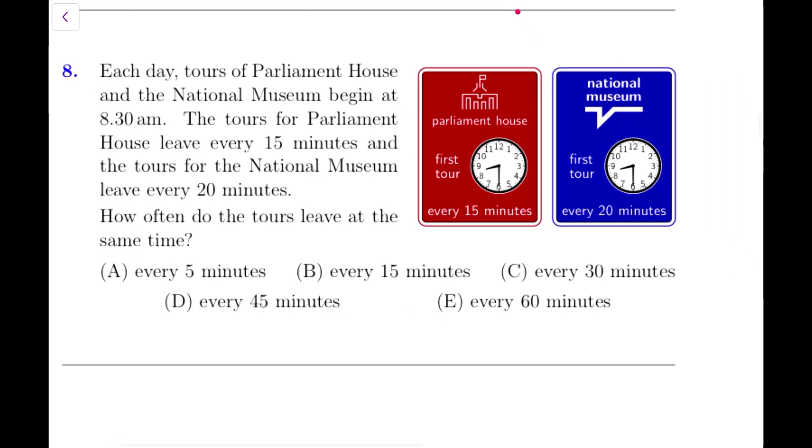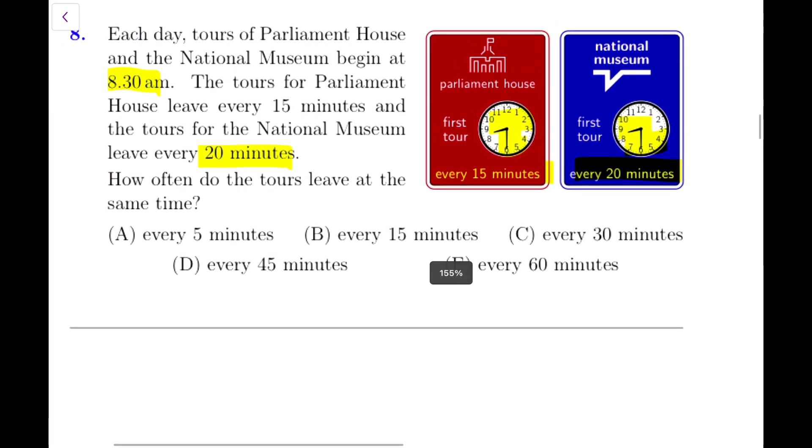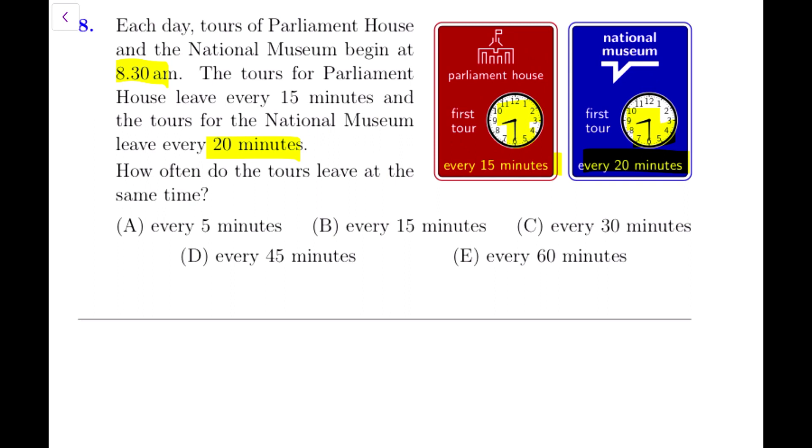Alright, this is a good one. Each day, tours of Parliament House and the National Museum begin at 8:30 a.m. We can see they both start at 8:30. The tours for Parliament House leave every 15 minutes, and the tours for the National Museum leave every 20 minutes. How often do the tours leave at the same time? For finding out the same time, we have to just note down the first few times and see which times will be the same for both the tours.